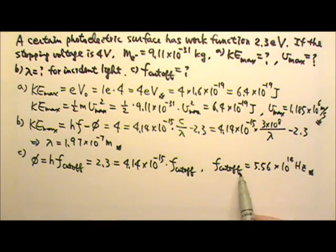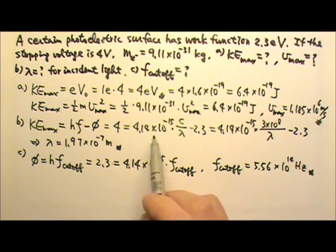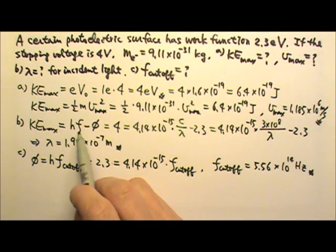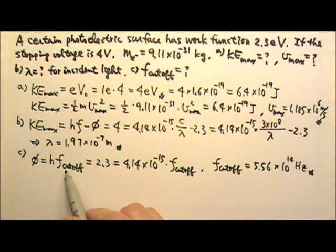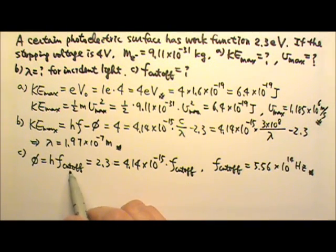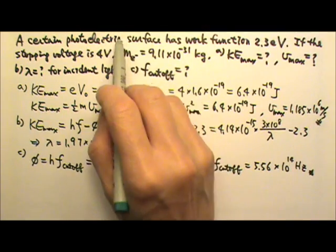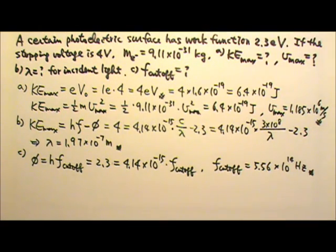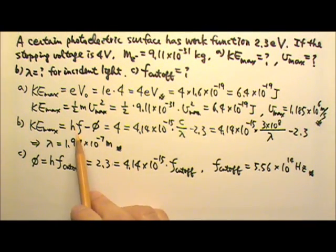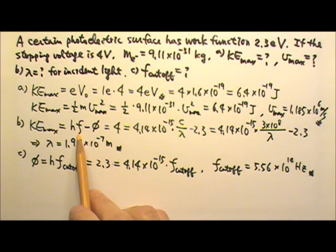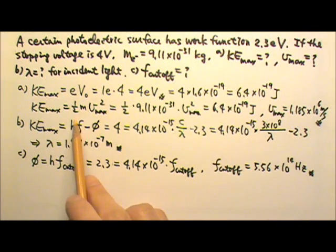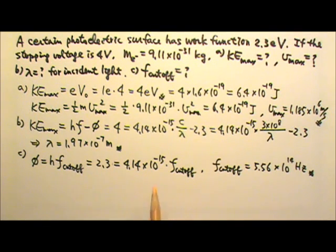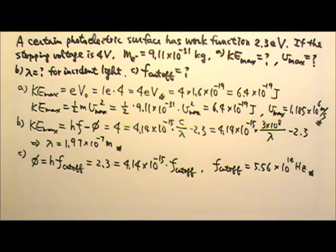Note this frequency is not the same as the incident light frequency. The cutoff frequency is a property of the photoelectric surface. Since the incident light produces current, it must have frequency higher than the cutoff frequency.